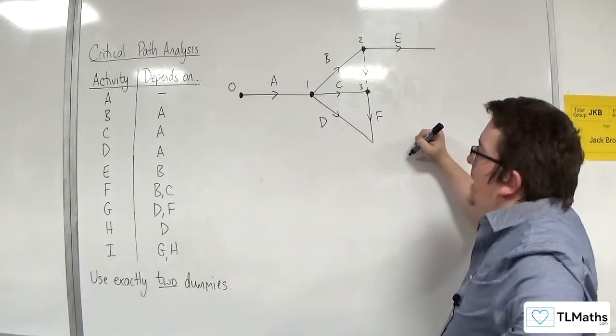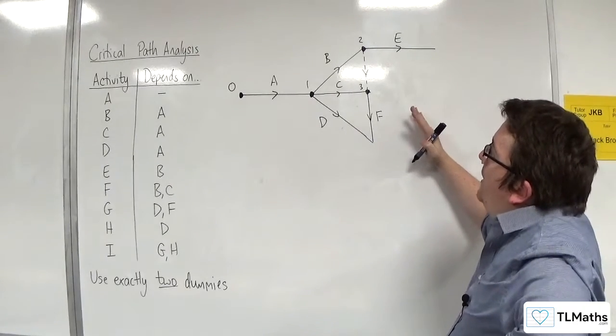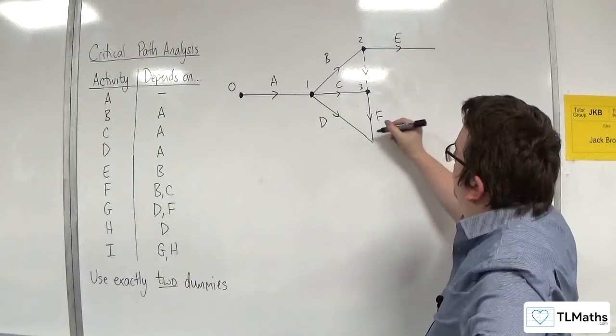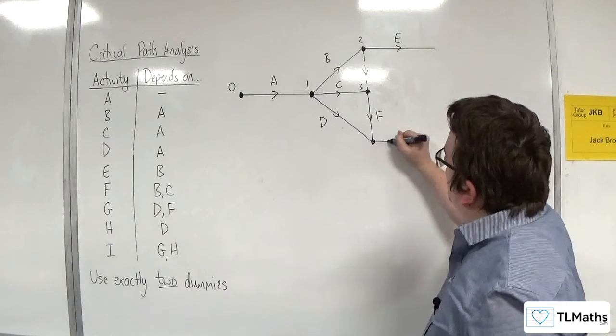So, F relies on both B and C. That's fine. G relies on D and F. So, let's have that.